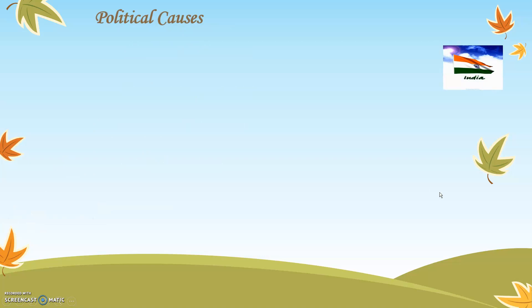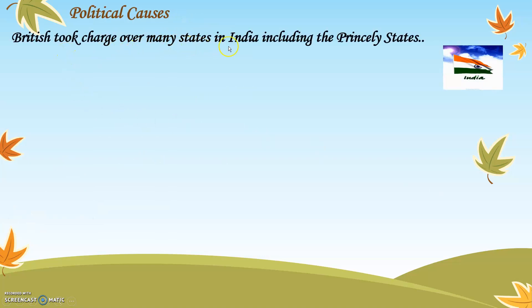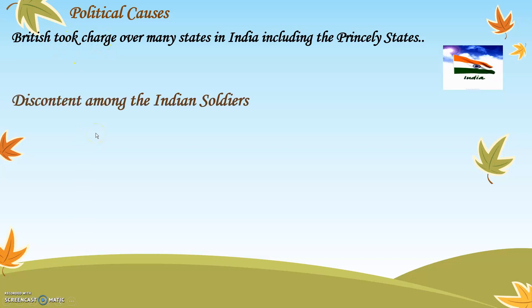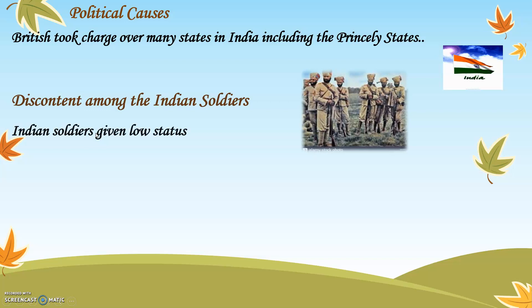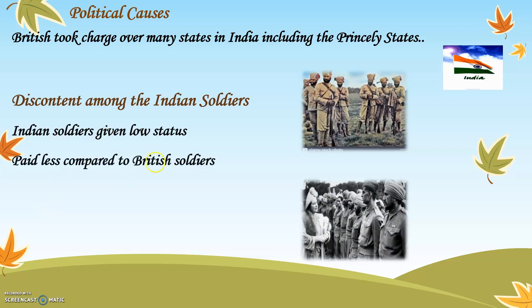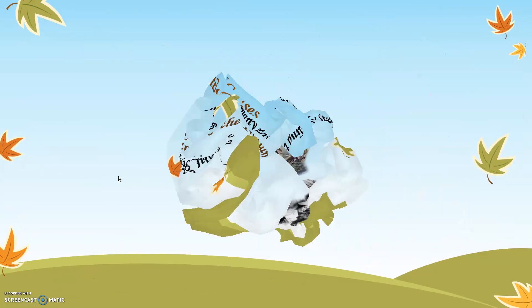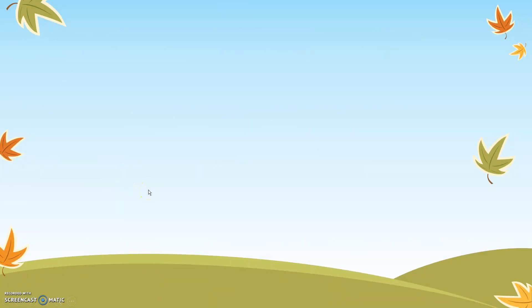Next is the political cause. The British took charge over many states in India, including the princely states — states ruled by any ruler or king. Almost all the states in India were now under the control of the Britishers. Next is discontent among the Indian soldiers. Indian soldiers were given low status, their salaries were less compared to those of the British soldiers, they were paid less and given more work. This was all the reason that made the Indians very angry and motivated them to fight for independence.